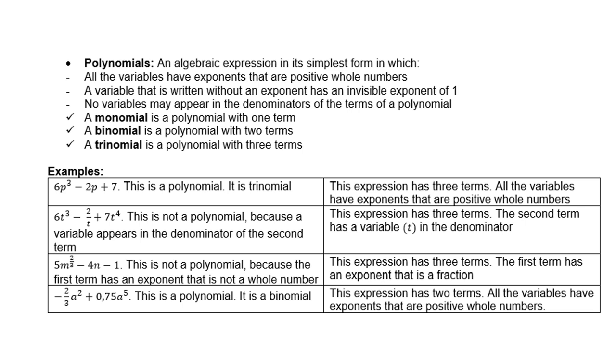5m^(2/3) - 4n - 1. This is not a polynomial because the first term has an exponent that is not a whole number. This expression has three terms, the first term has an exponent that is a fraction. -2/3 a² + 0.75a⁵. This is a polynomial, and of course in this case also a binomial. This expression has two terms. All the variables have exponents that are positive and are whole numbers.